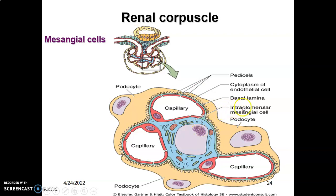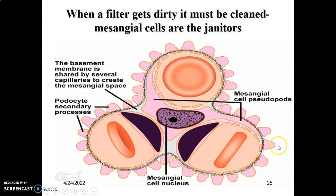Looking here, this is the location of your extraglomerular mesangial cells. In between the capillaries, you have your extraglomerular mesangial cell. These are the podocytes, and these are the fenestrated capillaries lying on the basal lamina. The podocytes on the basal lamina form the filtration barrier. Again, here is a mesangial cell within the glomerulus. When the filter gets dirty or molecules are trapped, they are cleaned by the mesangial cells.